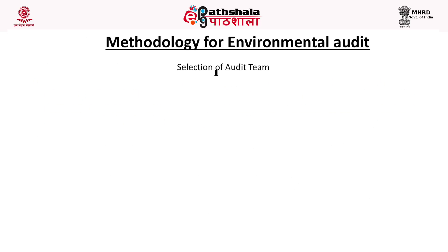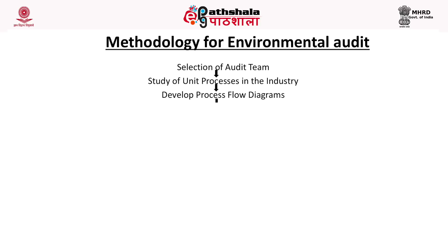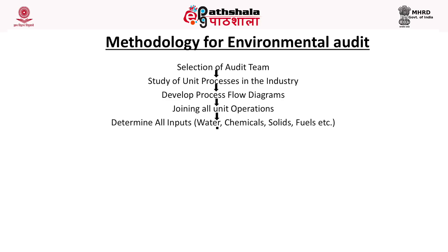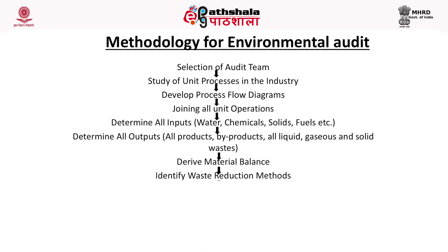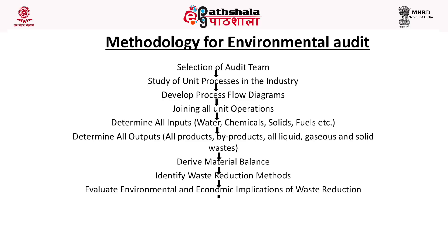If I come to the methodology of environmental auditing, the very first step is selection of the audit team — its size will depend upon the scope of the auditing. Once the audit team is identified, we will study the unit processes taking place in the industry, develop flow diagrams of different processes, join all unit process operations, and then determine all inputs such as water, chemicals, solids, fuels, etc.